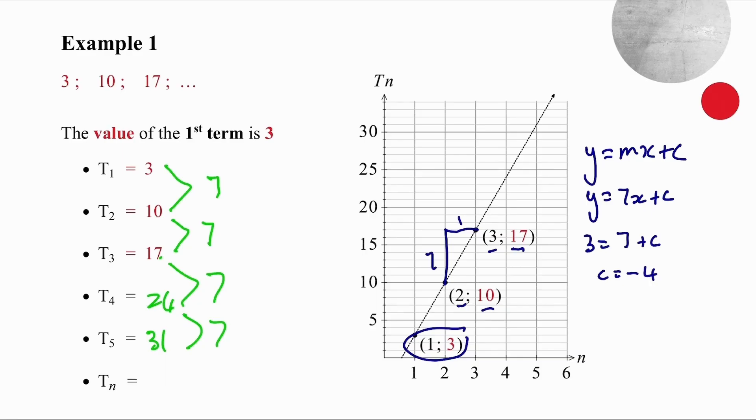Now the linear pattern is very similar. We're going to use the formula Tn equals an plus b. A is going to represent the constant change in the same way that m in the straight line represents the constant gradient. And we know that our constant change is 7. So this is going to be Tn equals 7n plus b. Now we can substitute and get 3 equals 7 plus b, and therefore we know that b equals minus 4. So our answer here is 7n minus 4.